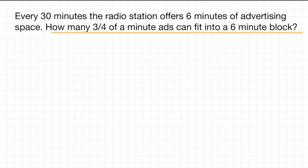Now there's some information here that's really not relevant and we don't need to take it into account when we're doing our calculations. Here it says every 30 minutes, the radio station offers six minutes of advertising space. That's really not relevant. It could be every three days, every 30 days, every three years, the radio station offers six minutes of advertising space. That's not really relevant.